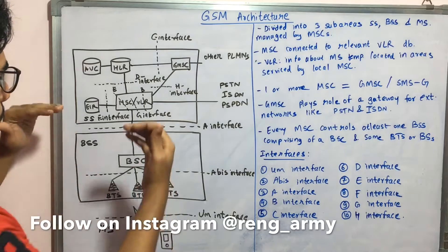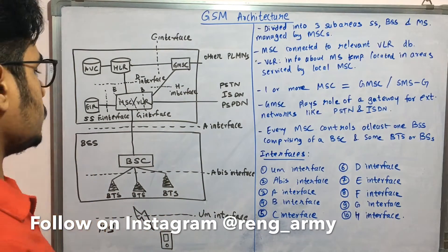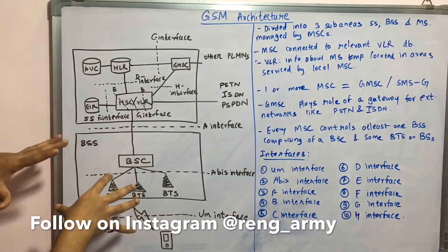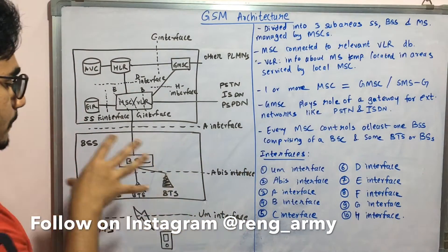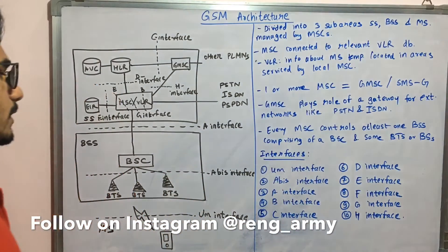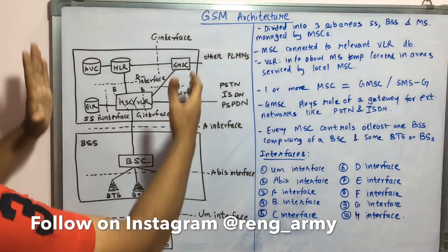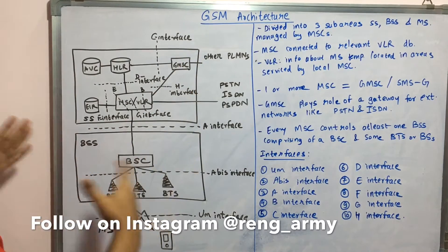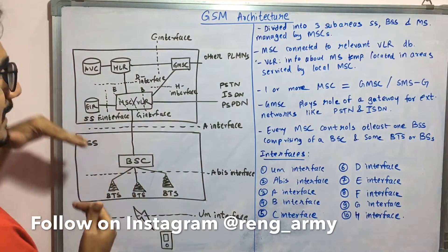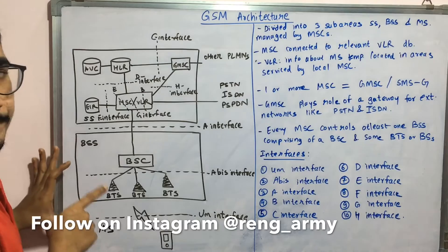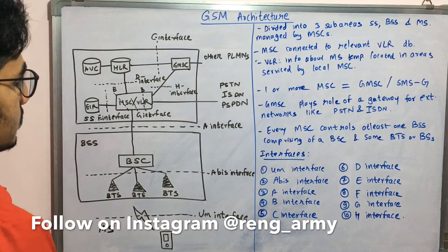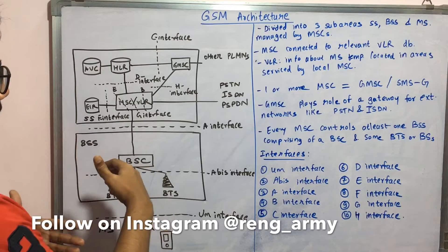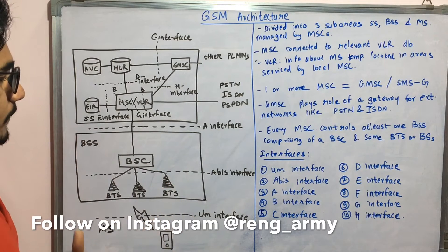Moving down to layer two — the BSS, Base Station System. Every MSC controls at least one base station comprising a BSC (Base Station Controller) and certain BTS (Base Transceiver Stations). The BSS layer gets all its controls from the layer above it. The interface connecting the SS (Switching System) and the BSS is the A interface, while the interface between the BSC and the BTS is called the Abis interface.